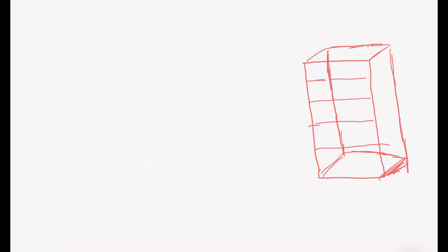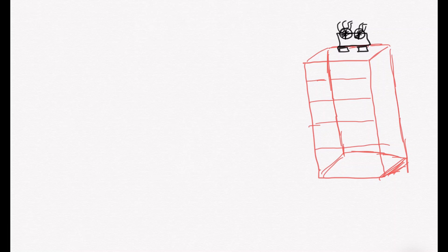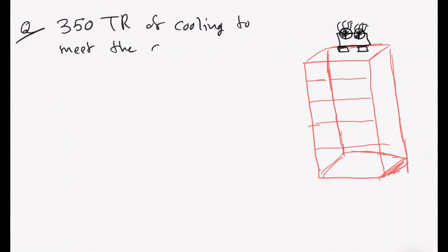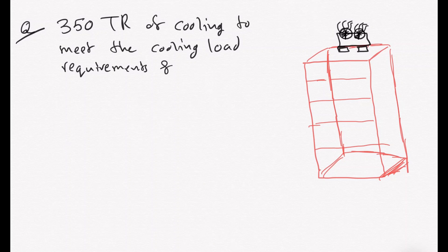For my building, I'm going to keep it simple. I'm going to have a single air-cooled chiller at the top of the building. Let's say I have a building which requires 350 tons of cooling — the complete building requires 350 tons of cooling to meet the cooling load requirements for the application.